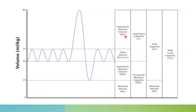Total lung capacity is the sum of inspiratory reserve volume, tidal volume, expiratory reserve volume, and residual volume. Inspiratory reserve volume is the extra air inhaled above normal breath in, while expiratory reserve volume is the extra air forcefully exhaled beyond a normal breath out. These are the various respiratory parameters.